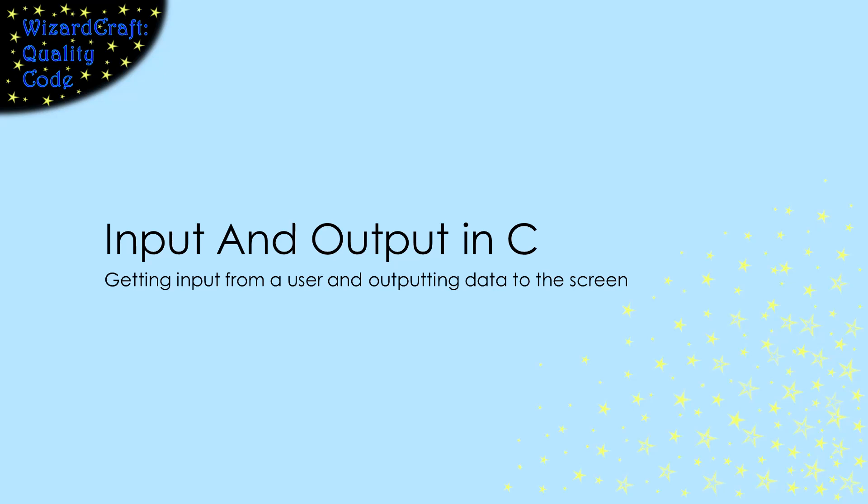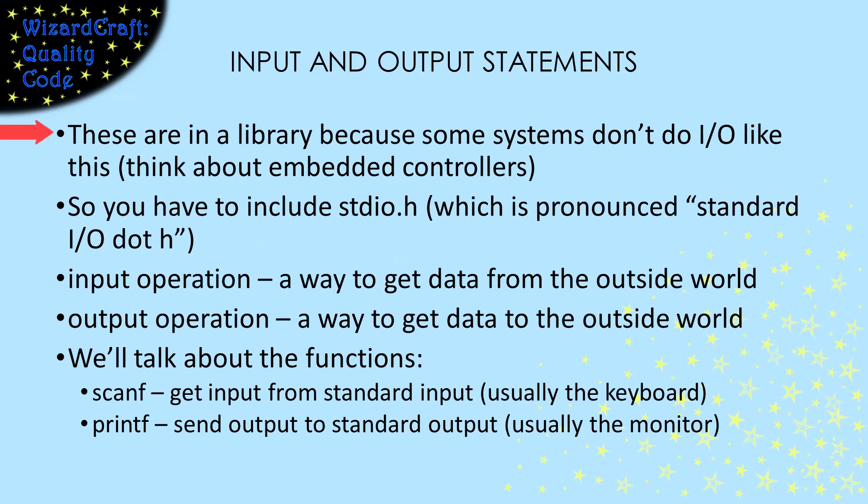Just a quick video with the basics of IO. More details about these functions and error detection on input to come. C is interesting because IO is not part of the base language. When they designed C, they wanted to make it as small as possible. If there was a chance that something wouldn't be used, it was put into a library. Since there are systems that don't do IO, it is in the standard IO library and you have to include stdio.h to use these functions.